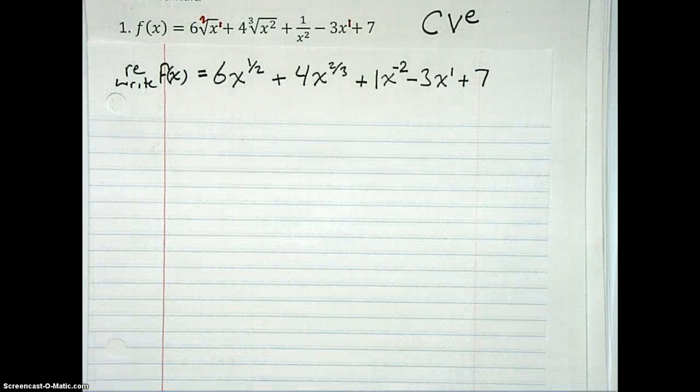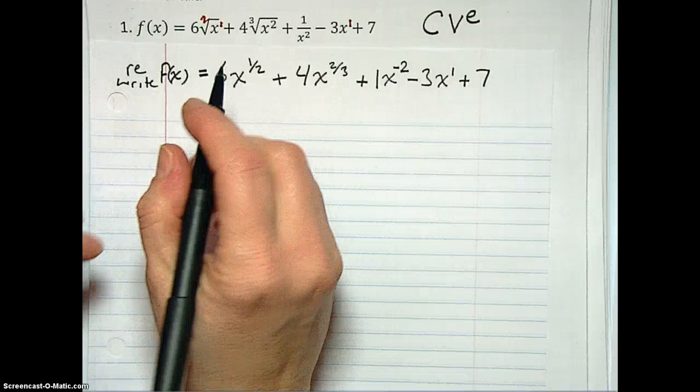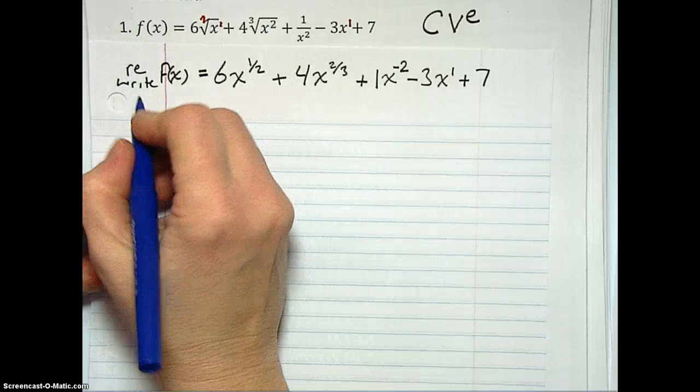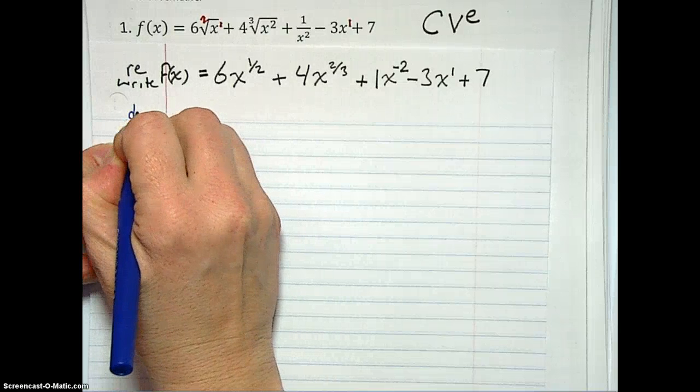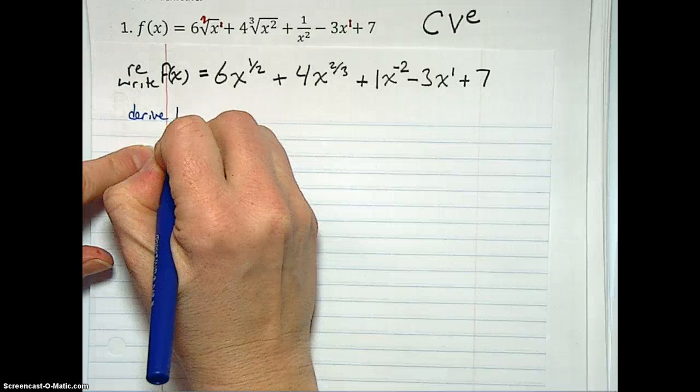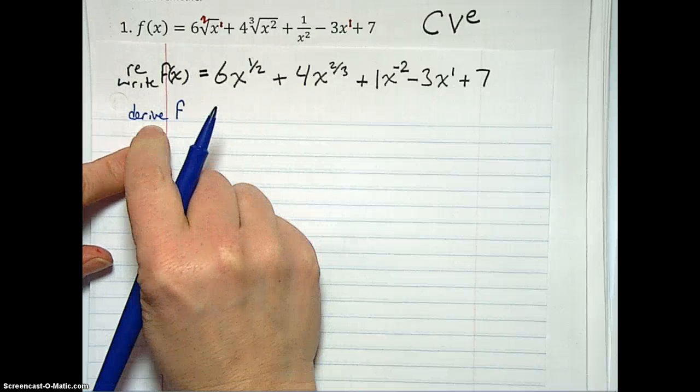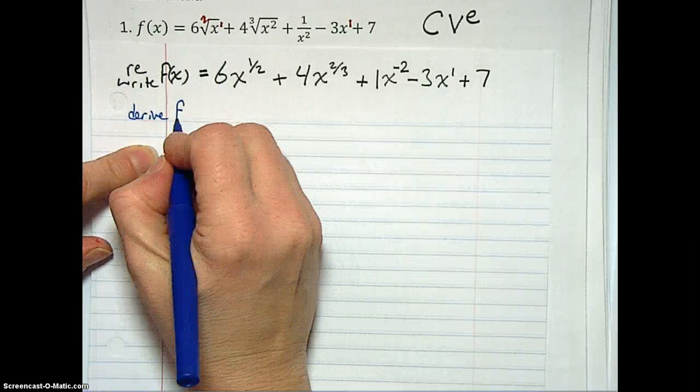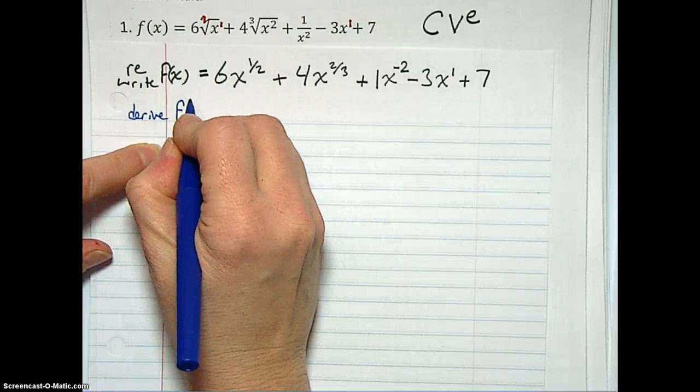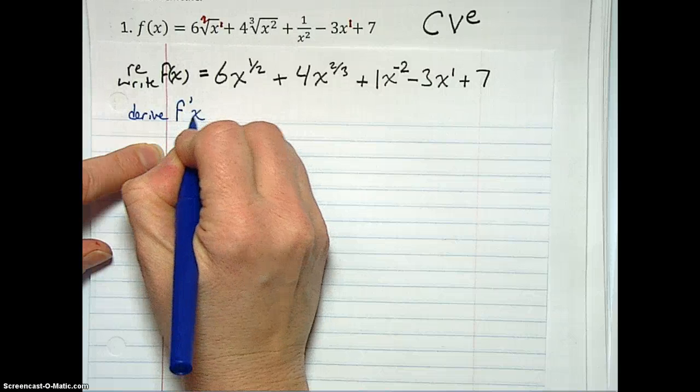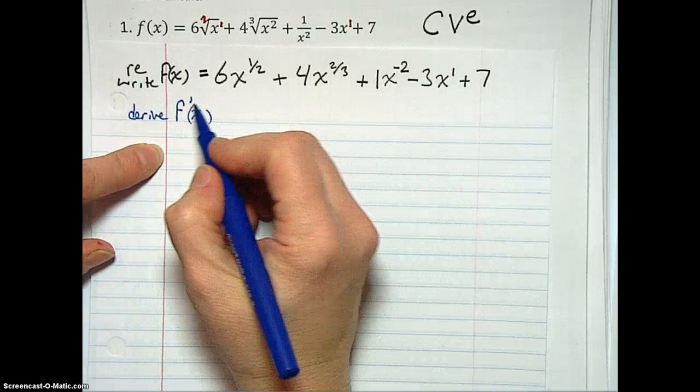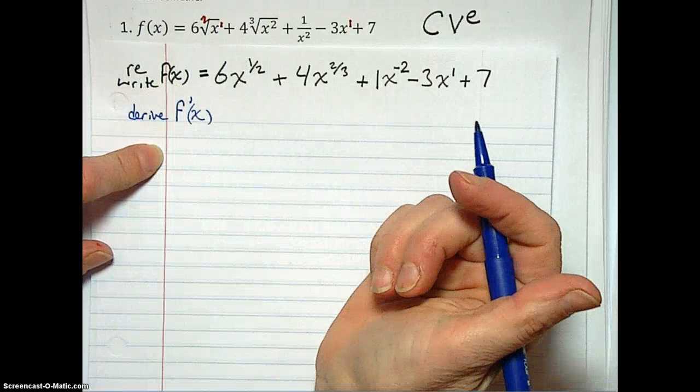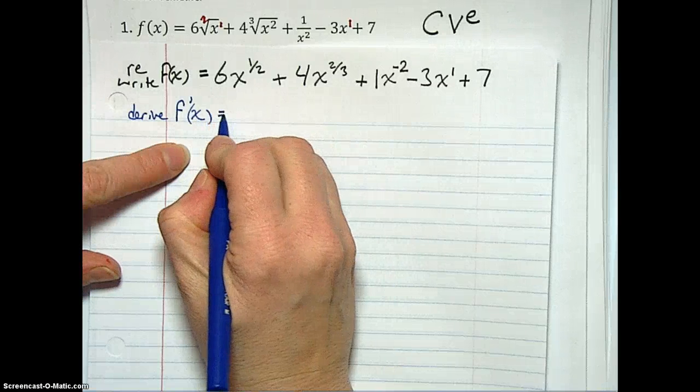I'm going to do this one a little bit more efficiently than I did the last one. We go ahead, we rewrote as coefficient, variable, exponent. Now we're going to derive. So now you're going to write derive. So first you write your function, then you write your rewrite, then you write your derivative in the ugliest form, f prime of x. The bare minimum is you've got to change this to an f prime. So now we're talking about the derivative using the shortcut rules.